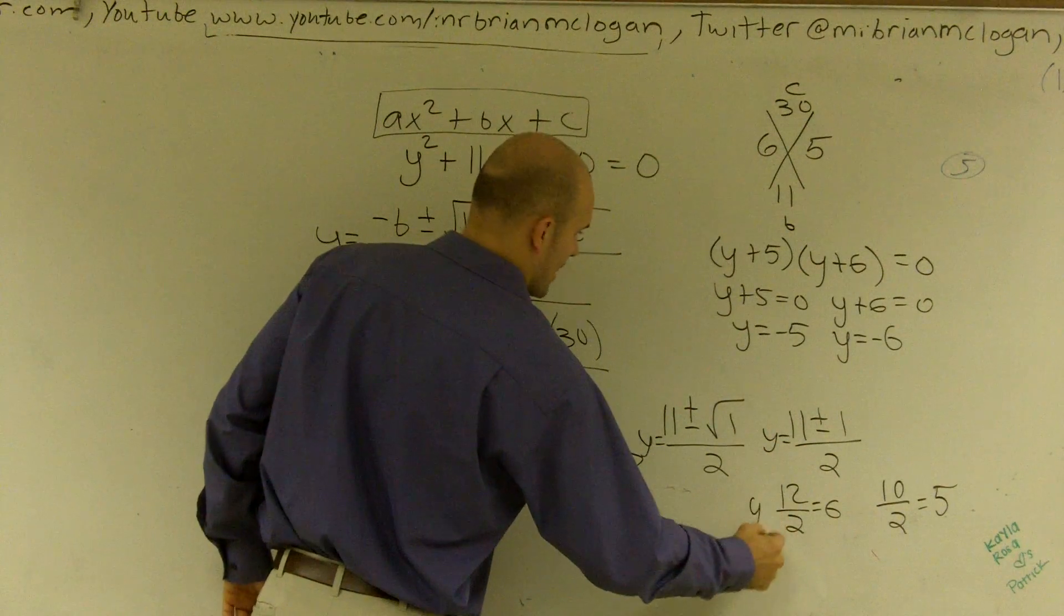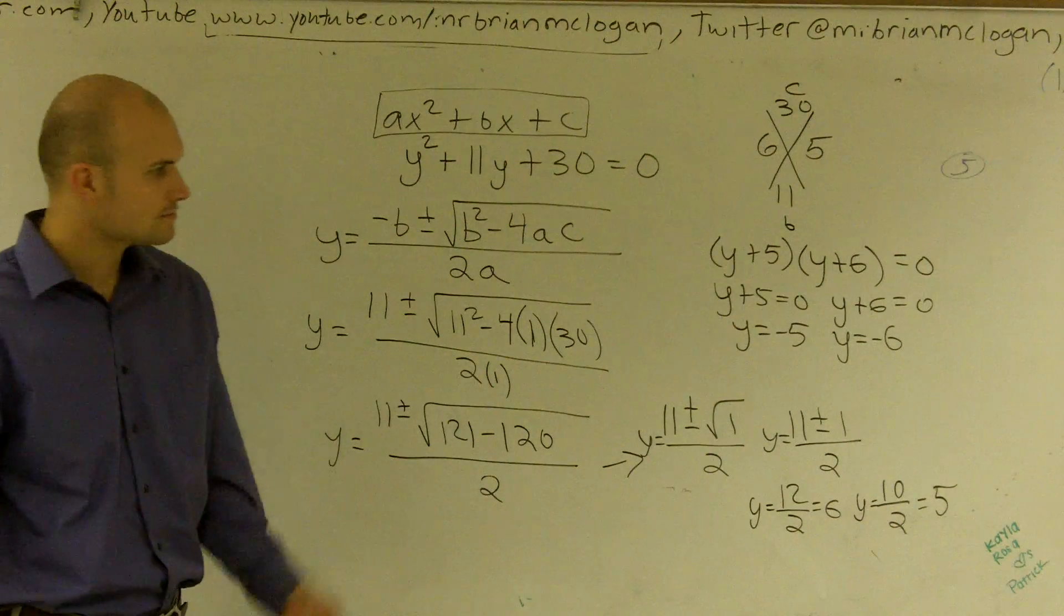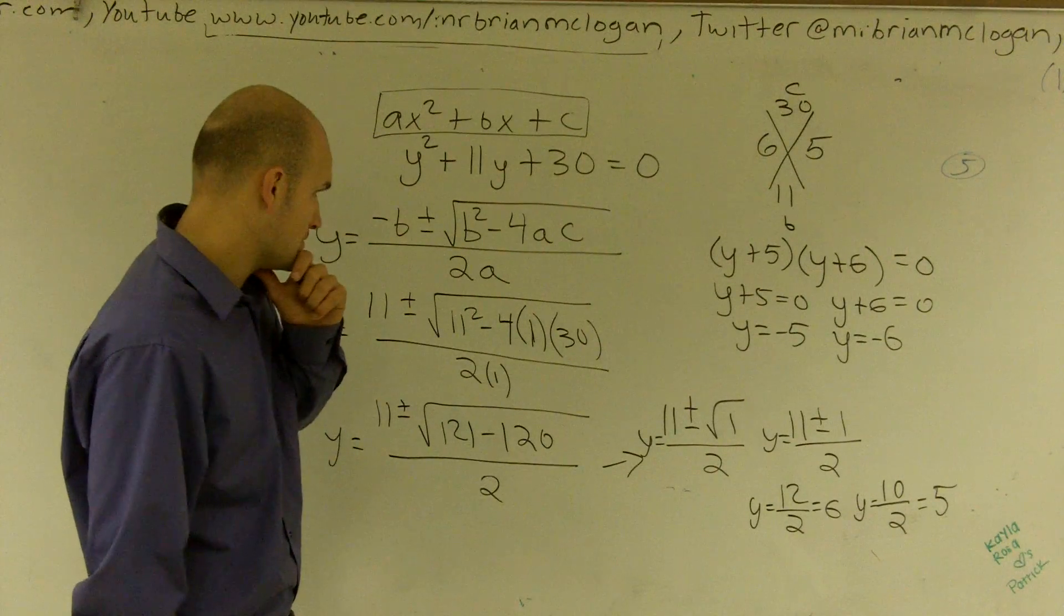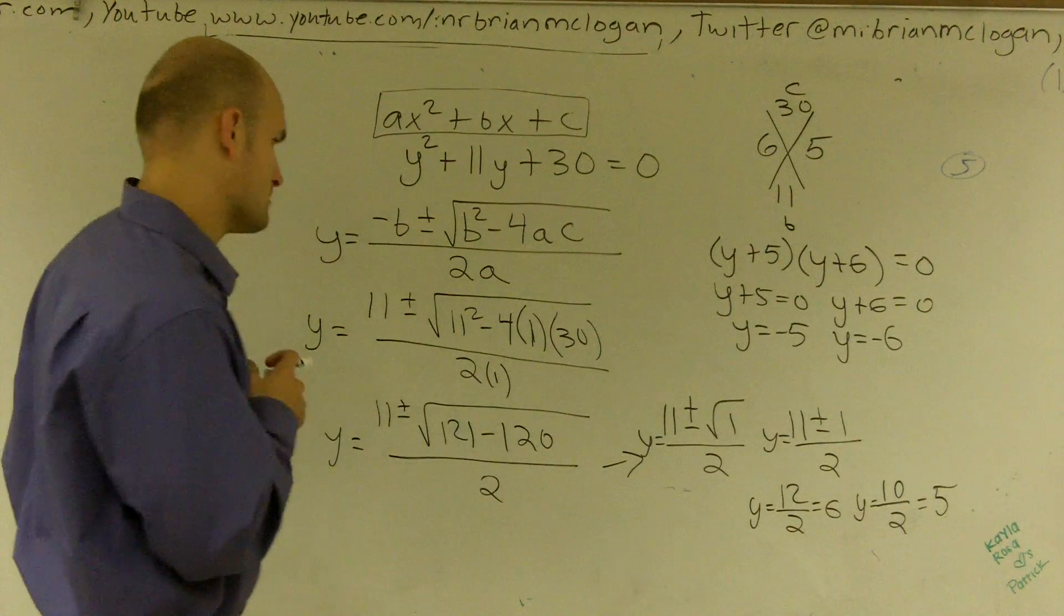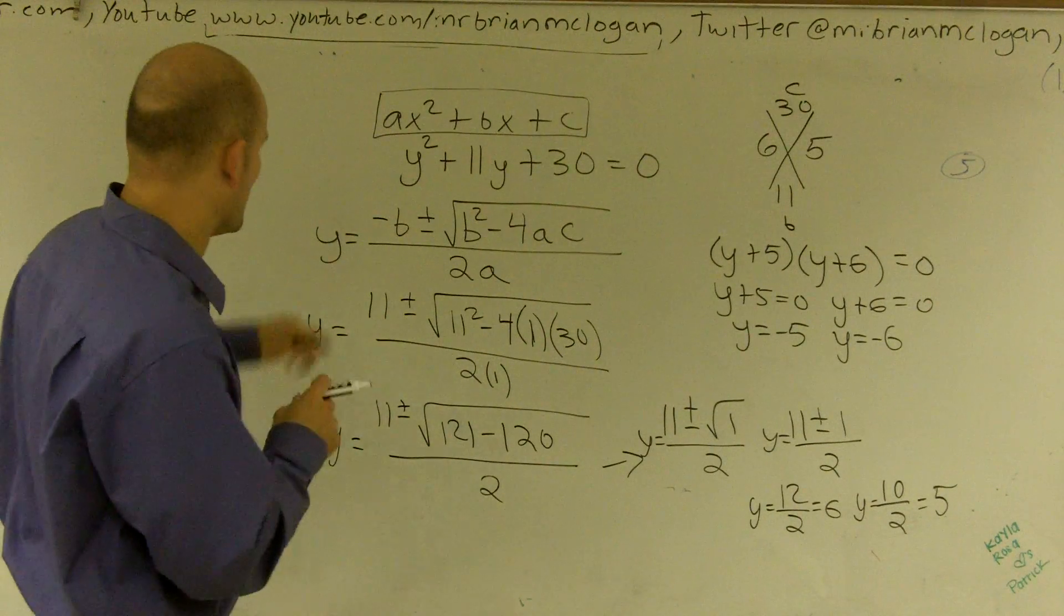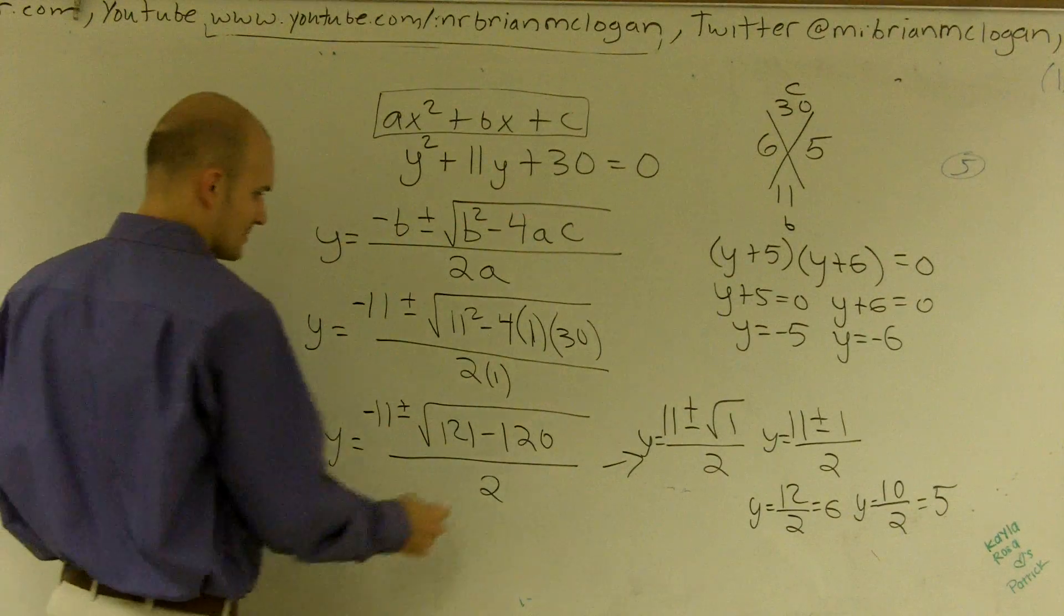So therefore, you can just say y equals 6 and y equals 5. Which, I'm sorry. Oh, crap. What am I looking at? Plus or minus? 12 divided by 2. Oh, shoot. That's opposite of b, right? That was a negative 11. No wonder.